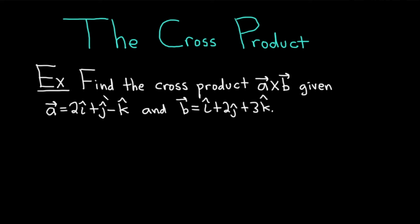The example says: find the cross product A cross B, given the vector A equal to 2i-hat plus j-hat minus k-hat, and the vector B equal to i-hat plus 2j-hat plus 3k-hat.